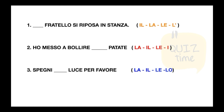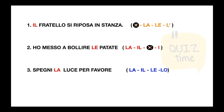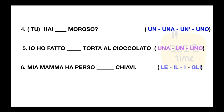Spegni la luce per favore. Choose the article: la, il, le, or lo. Tu hai moroso — un, un apostrofo, uno. Io ho fatto una torta al cioccolato. Una, un, uno. Mia mamma ha perso le chiavi — le, il, i, or gli.